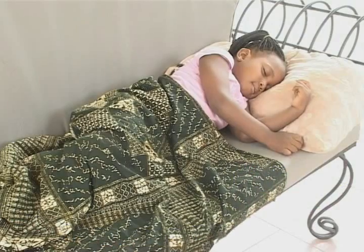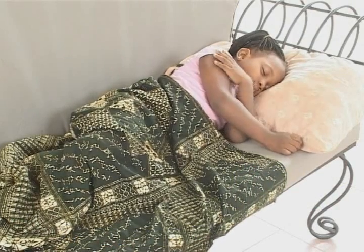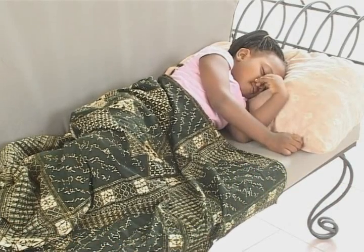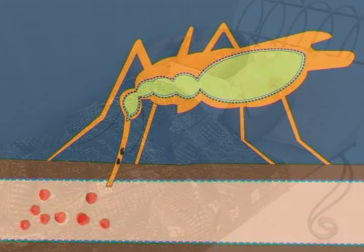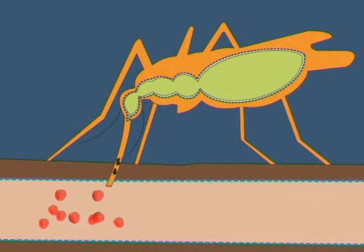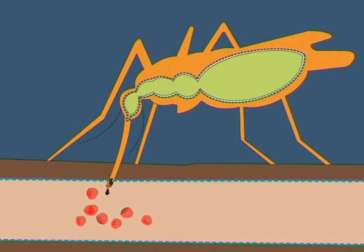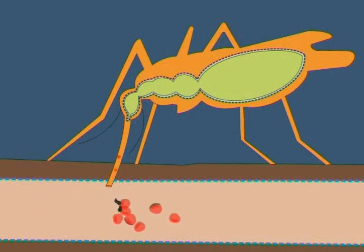The same mosquito bites another young daughter, called Asi. The sporozoites in the saliva are injected into Asi's blood and travel to her liver.